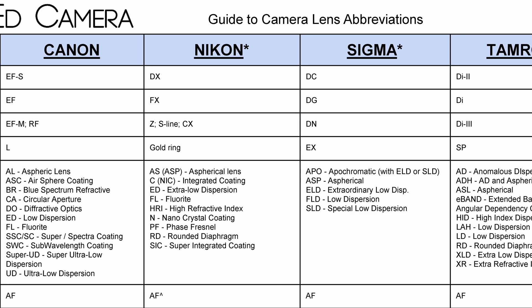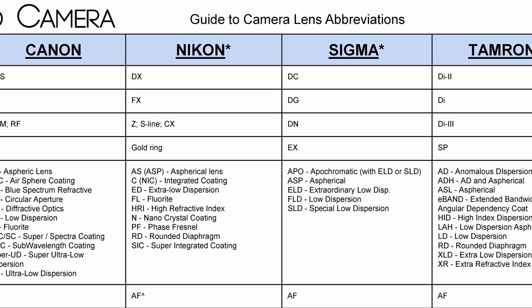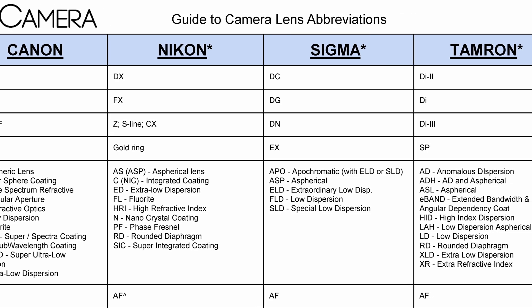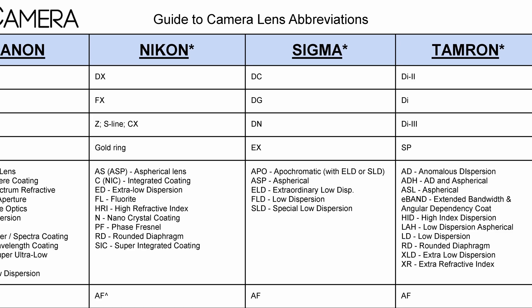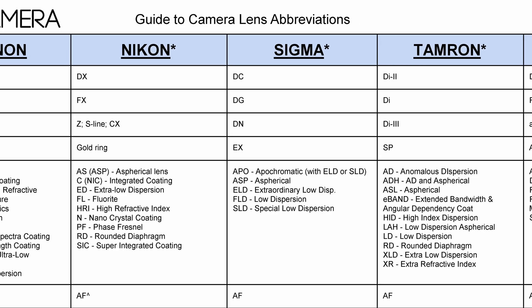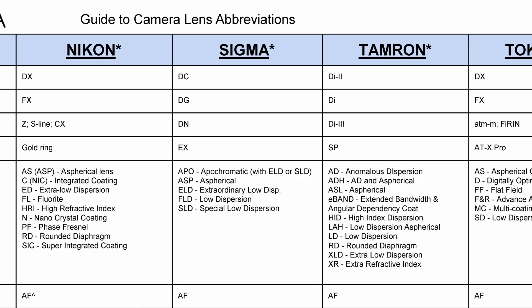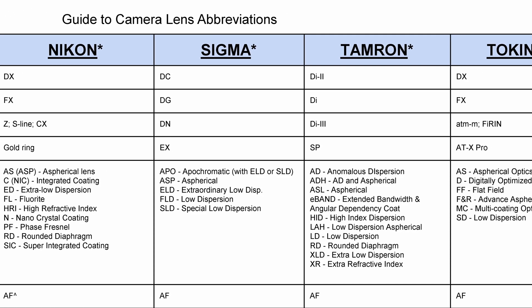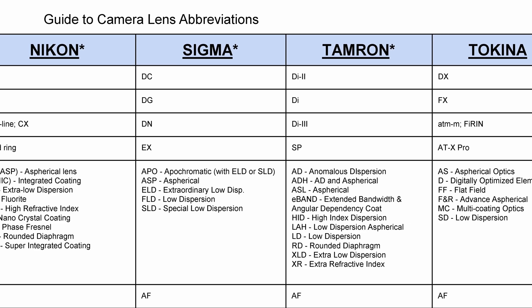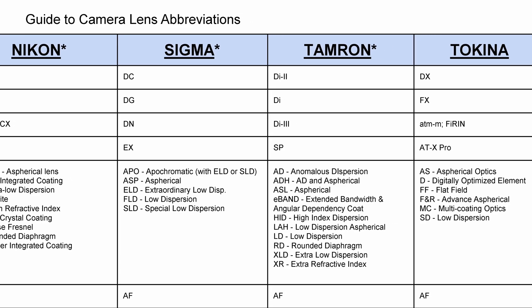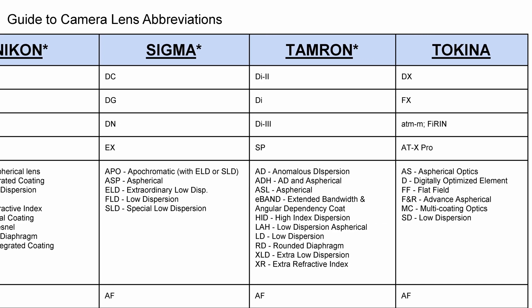There you will find a chart I created with a list of abbreviations for Canon and third-party manufacturers like Tamron, Sigma, and Tokina. You can download this and lots of other cool content too.